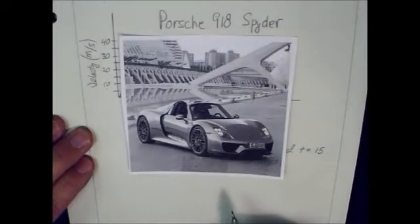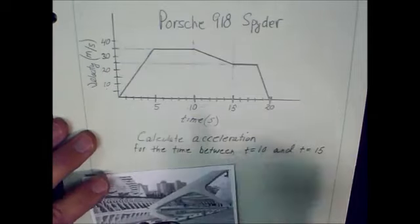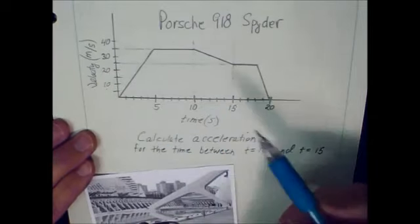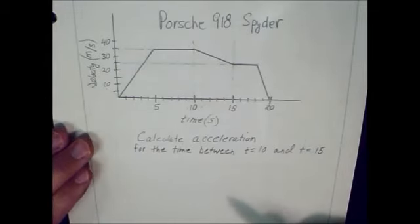The subject of our bell work problem today is the Porsche 918 Spyder. It's one of the fastest production street vehicles that you can buy. I've come up with a velocity versus time graph for the Porsche 918 Spyder.